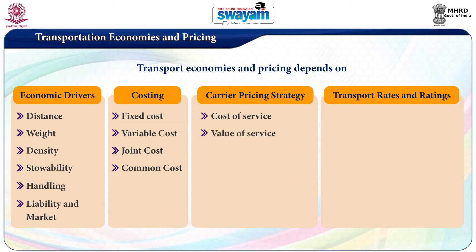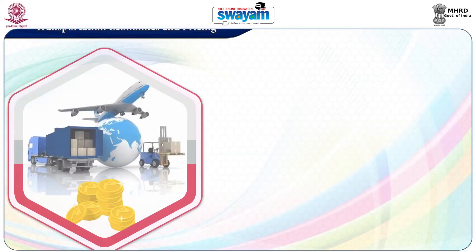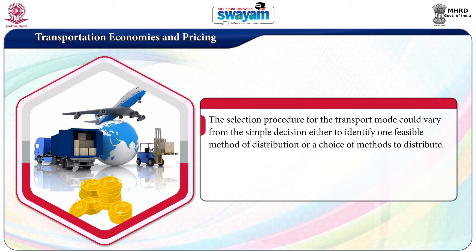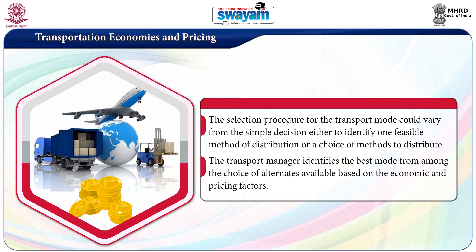Transportation rates depend on the region and the commodity to be transported. The selection procedure for the transport mode could vary from a simple decision of identifying one feasible method of distribution to a choice among multiple methods to distribute the products. The transport manager identifies the best mode from among the available alternatives based on the economic and pricing factors.